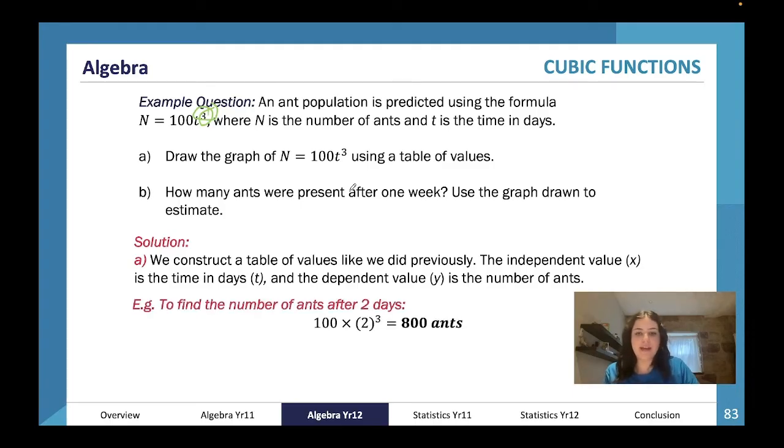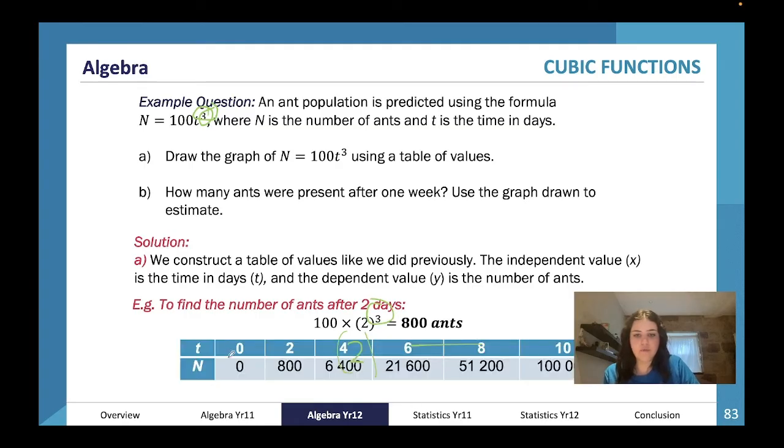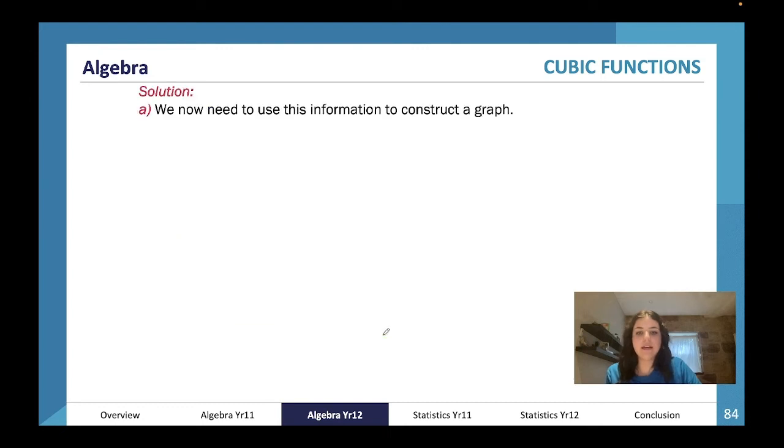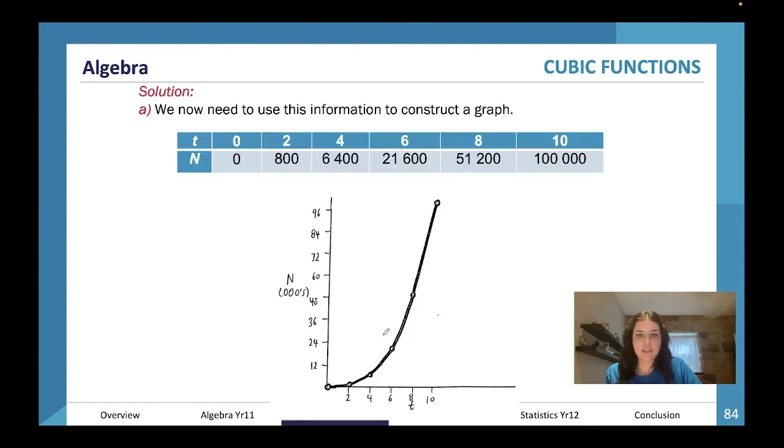To find the number of ants after two days, we're going to use the formula and substitute in 2 as t. We're going to use our cube: 800 ants after two days. We do that for six different data points: 0, 2, 4, 6, 8, 10. And now we can construct this in a graph. See how exponentially it immediately goes up like this, and there is no chance that it's going to go like this unless there's an intervening factor.